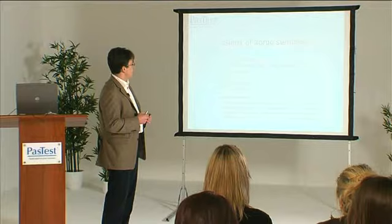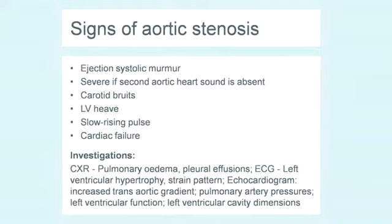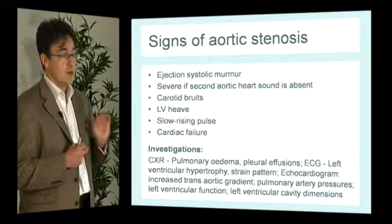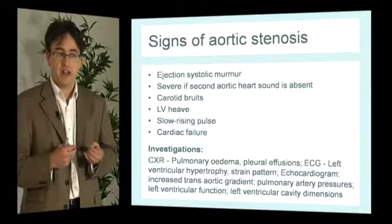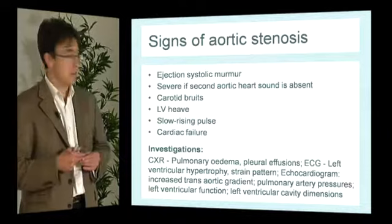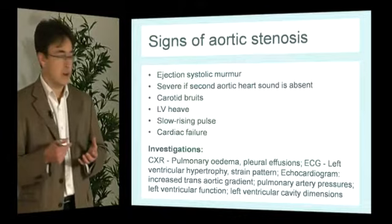What are the signs of aortic stenosis? There's an ejection systolic murmur loudest over the aortic area, usually best heard with the patient sitting forward with breath held in expiration. An important clinical skill is to listen for the second heart sound — if it's absent it's usually indicative of severe aortic stenosis. Murmurs are often referred to the carotid, so you may hear carotid bruits. The ventricle is under great strain so there may be a heaving apex beat and a slow-rising pulse.